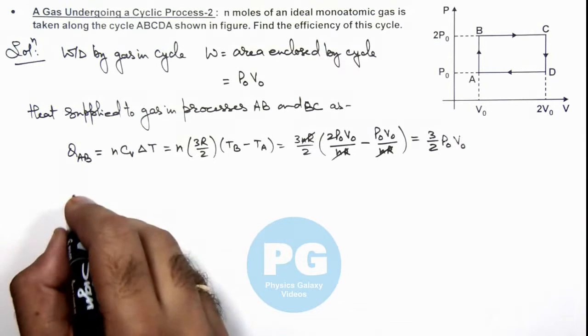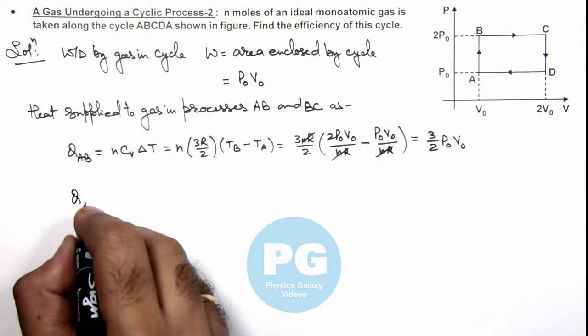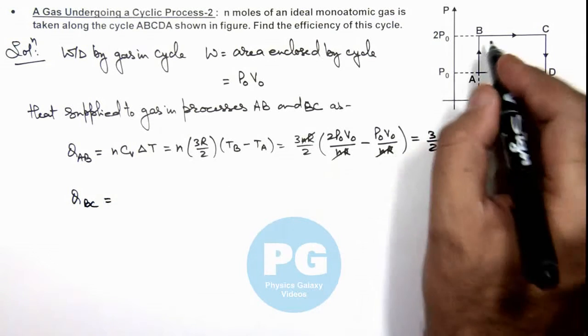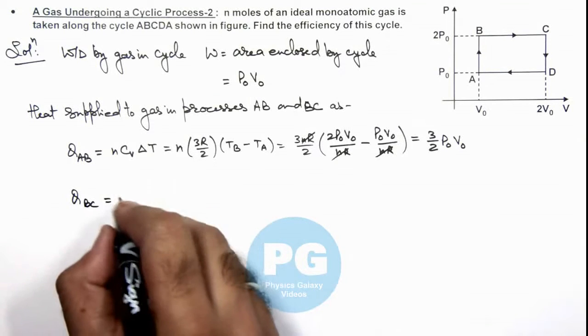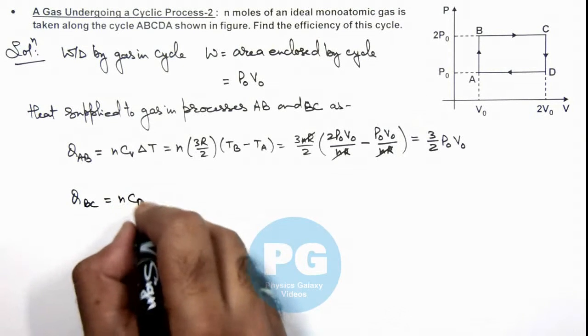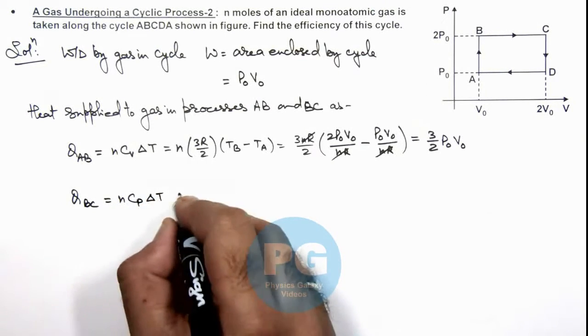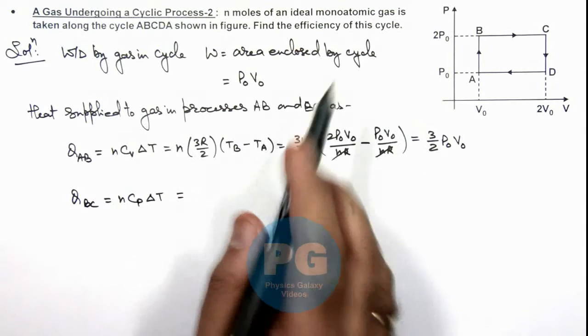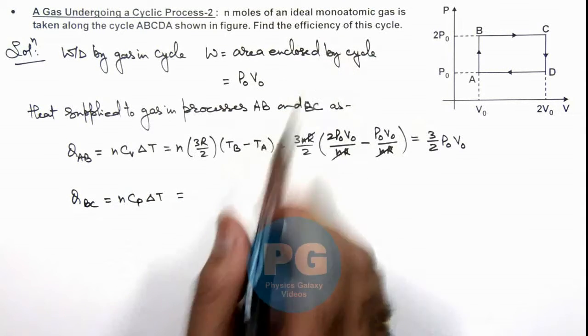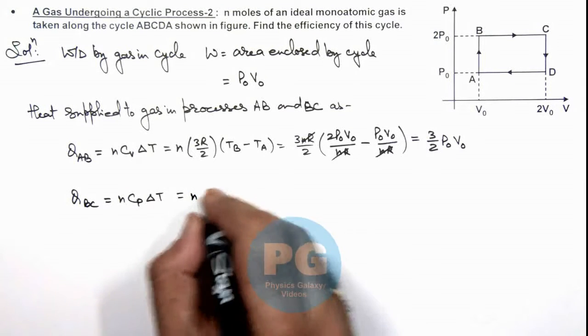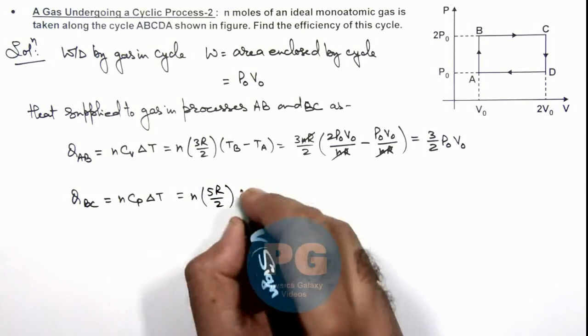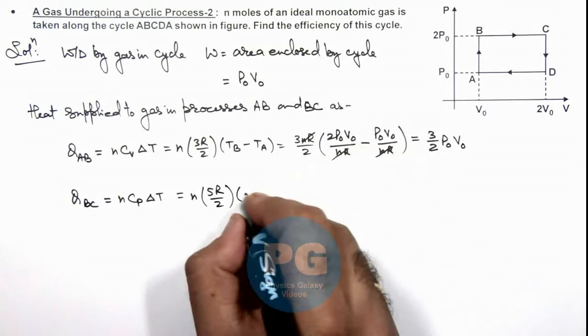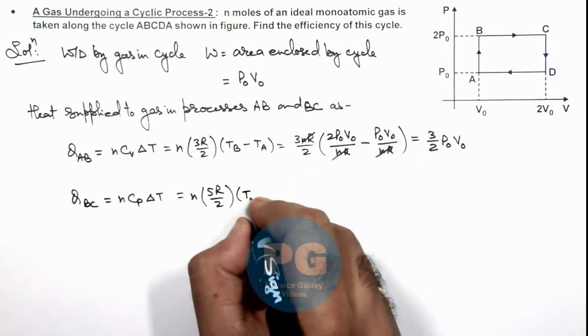Similarly we can calculate the heat supplied in the process BC which is an isobaric process. At constant pressure if the gas is heated, so the heat supplied will be written as n Cₚ ΔT. And for monatomic gas Cₚ we can write n multiplied by 5R/2, and we'll write this is Tꜿ minus Tբ.